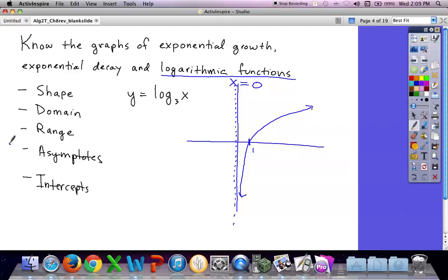When you name these asymptotes, you've got to say x equals. You don't get credit for saying 0. You've got to say x equals, because y equals 0 is a horizontal line. And if you don't know the difference, that's probably why you just put 0, because you didn't know.